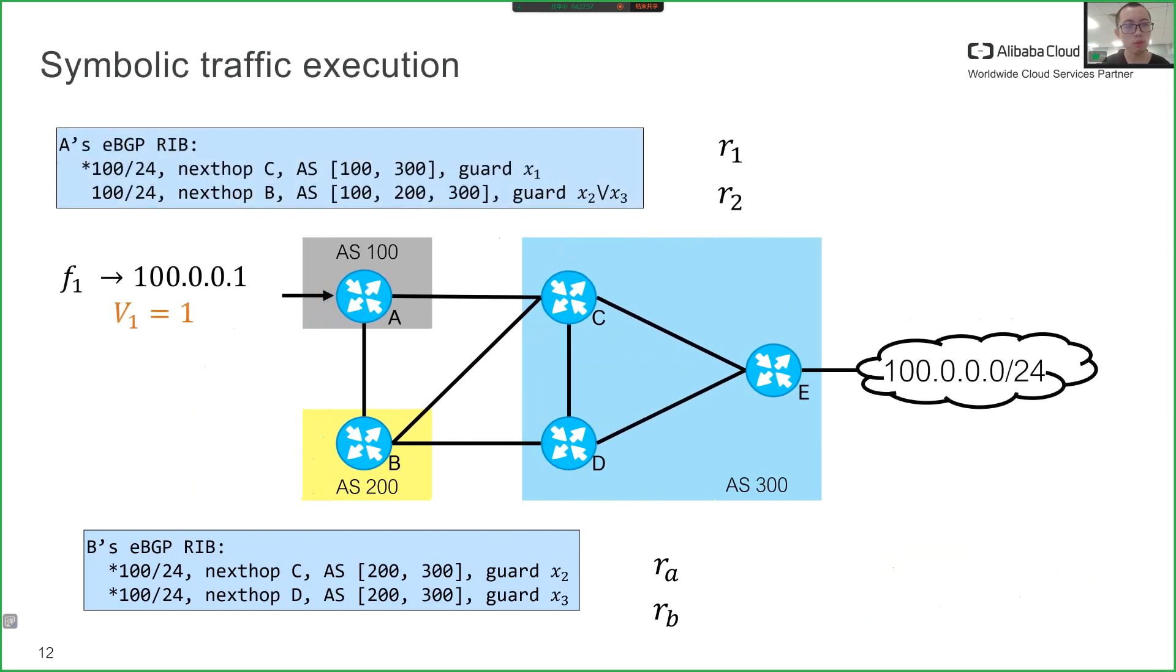Next, Yu performs symbolic traffic execution to compute the symbolic traffic load. For simplicity, we assume that the flow F1 carries one unit of traffic. First, router A forwards the traffic to router C and B according to the ratios CR1 and CR2, as well as router B. By repeating the process, the symbolic traffic load on each link can be computed.